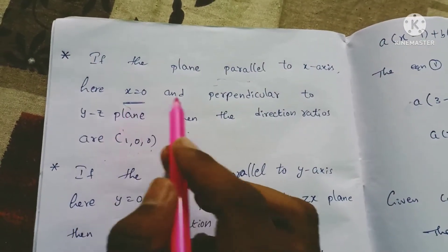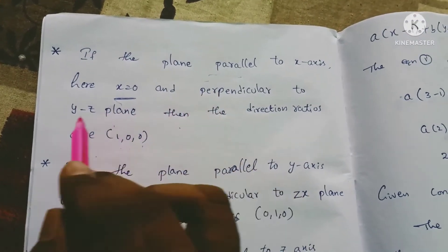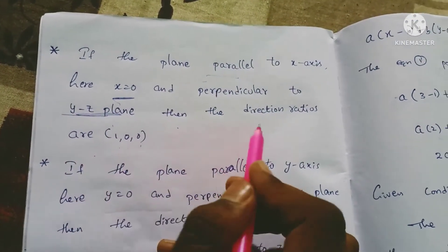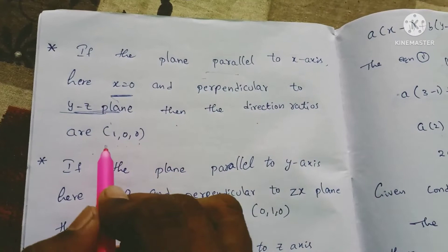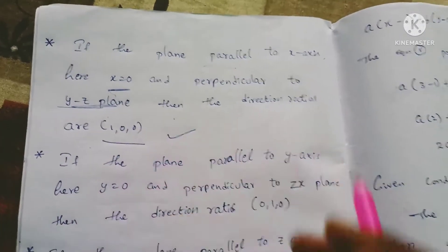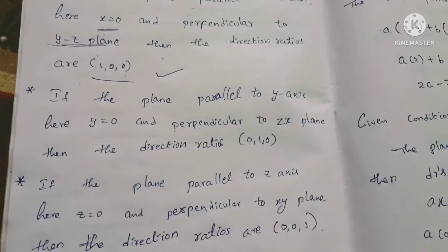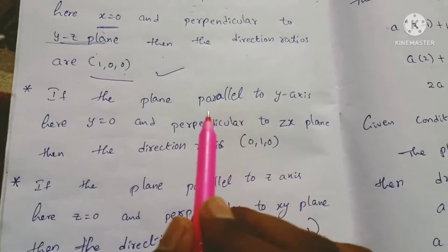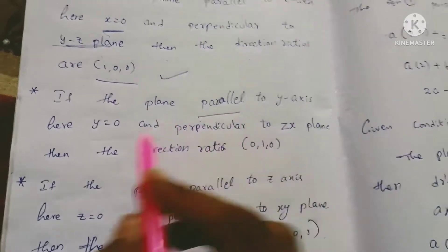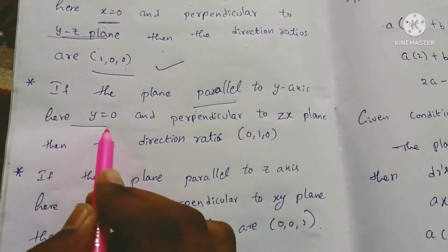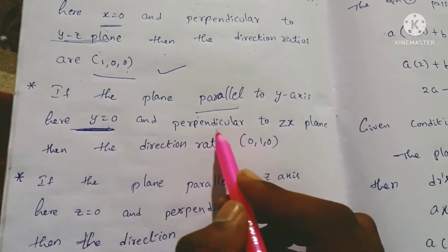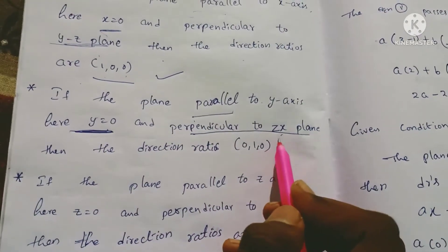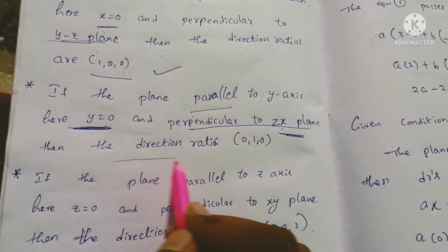If the plane is perpendicular to the y-z plane, then the direction ratios are 1, 0, 0. If the plane is parallel to the y-axis, then y is equal to 0, and perpendicular to the x-z plane. The direction ratios in that case are 0, 1, 0.